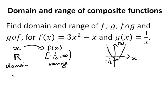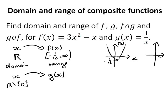Now let's look at g. What can we put into g? We can't divide by 0, but otherwise we can divide by any number. So the domain of g is ℝ excluding 0. Now if we put all of those values into g, it helps to picture what g looks like — it's a hyperbola. The values we get out are all values from infinity down to 0 (not including 0) and all values not including 0 down to negative infinity. So the range of g is the same as its domain: ℝ excluding 0.